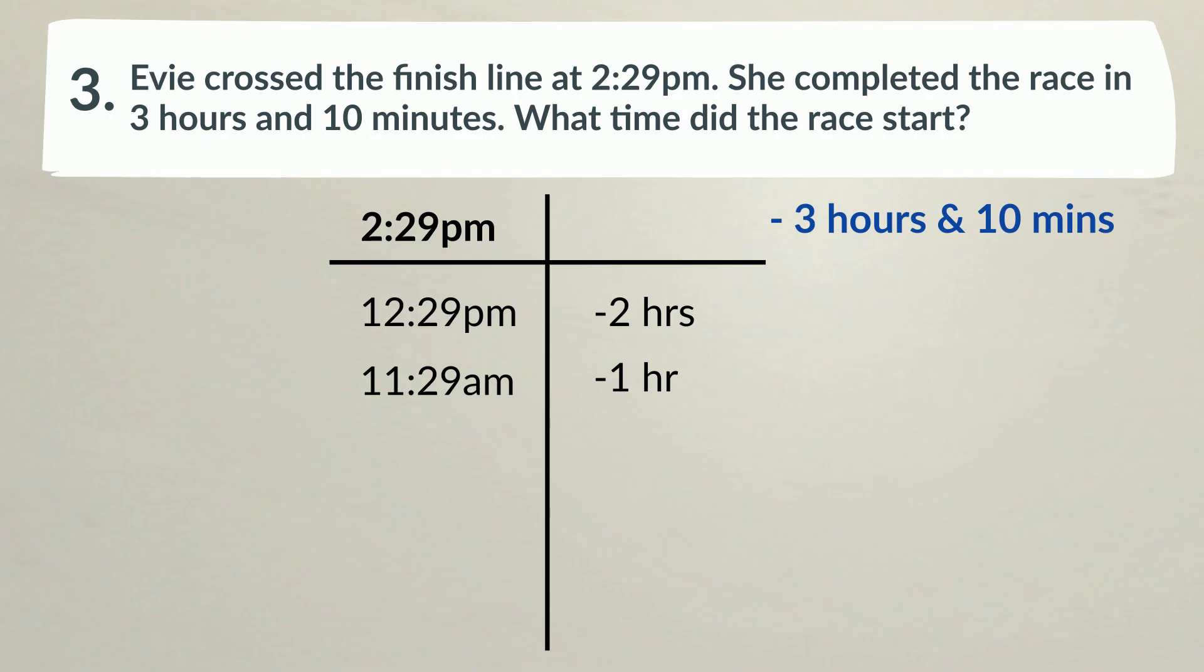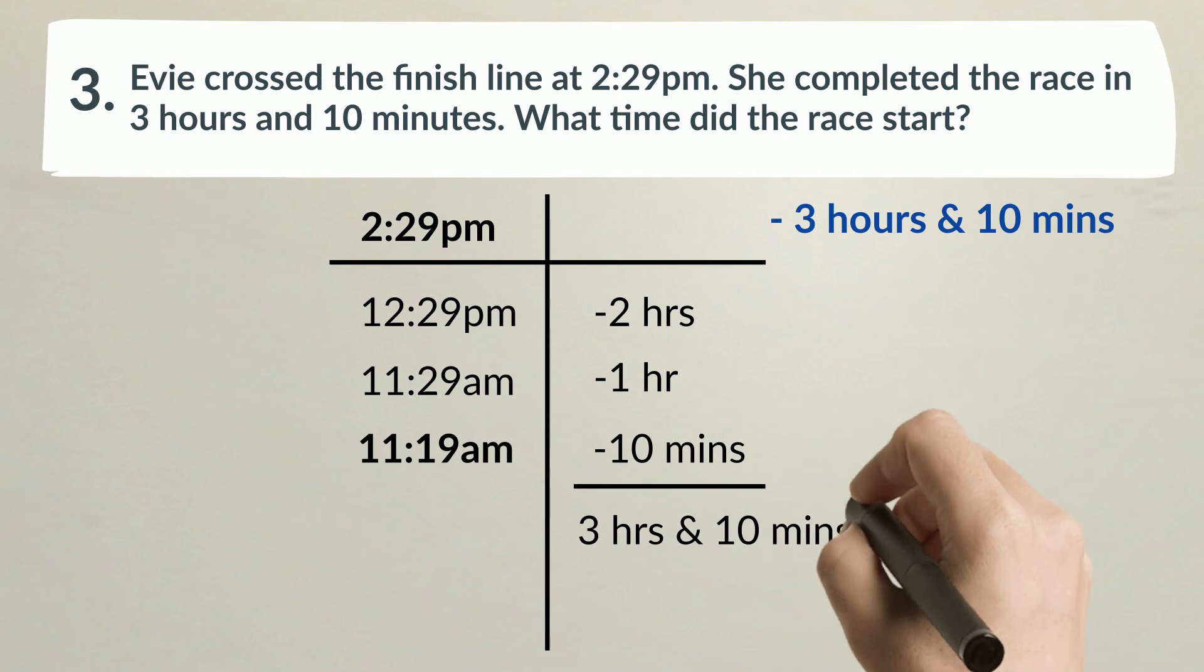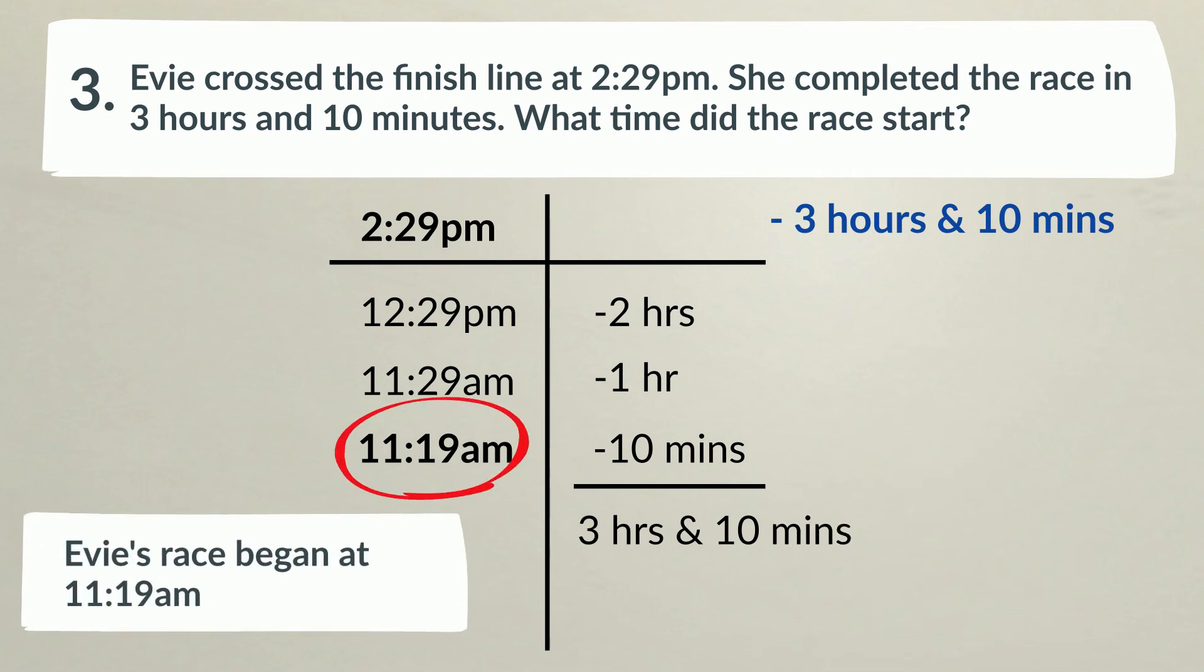Now let's subtract 10 minutes. 11:19am. We have taken away a total of 3 hours and 10 minutes. Evie's race began at 11:19am.